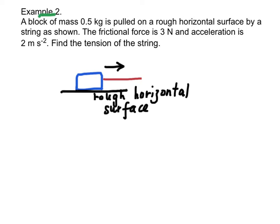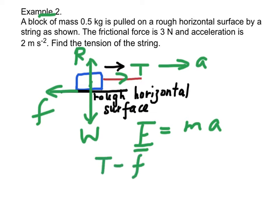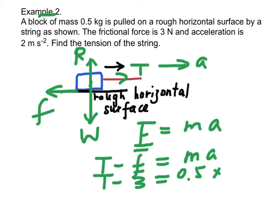The forces acting on the block are tension, friction, weight, and normal reaction R. By Newton's second law, the net force T minus frictional force equals MA. T minus 3 equals M times 0.5 times A. Solving, the tension of the string equals 4 N.